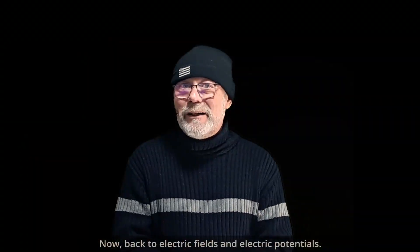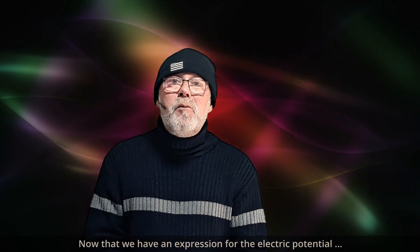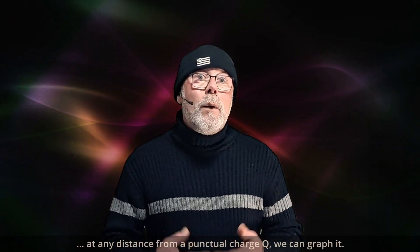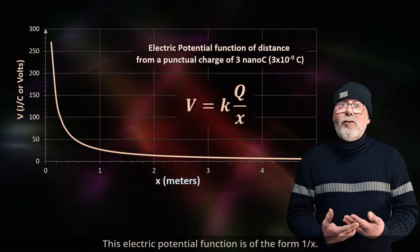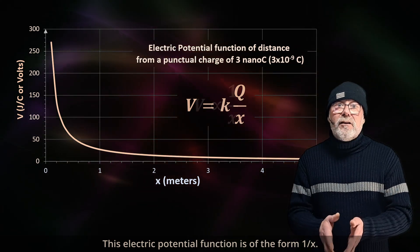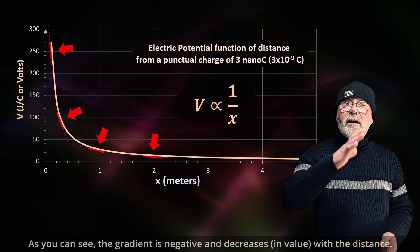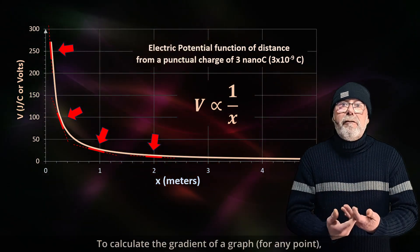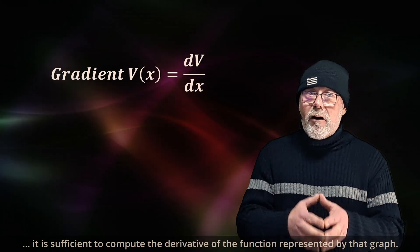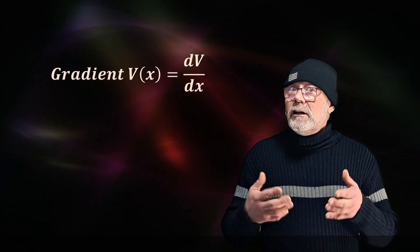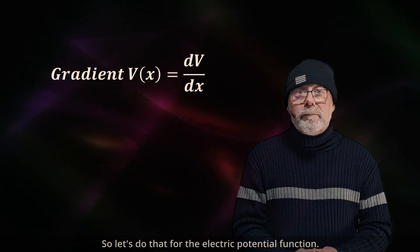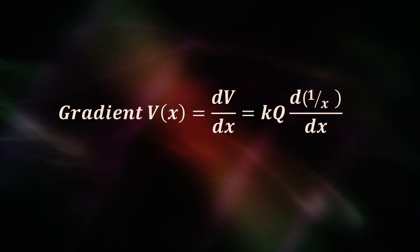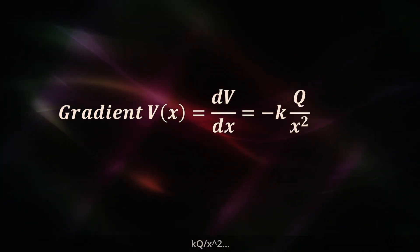Now that we have an expression for the electric potential at any distance from a point charge big Q, we can graph it. This electrical potential function is of the form 1 over x, so as you can see, the gradient is negative and decreases with the distance. To calculate the gradient of a graph, it is sufficient to compute the derivative of the function. Let's do that for the electric potential function: the result is kq over x squared.